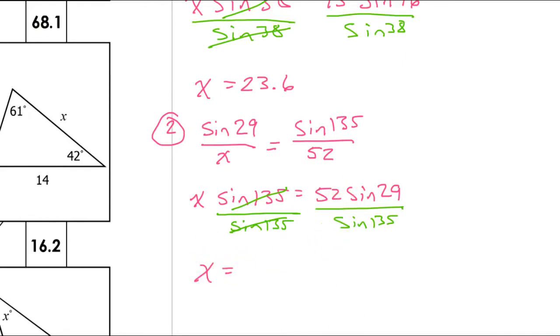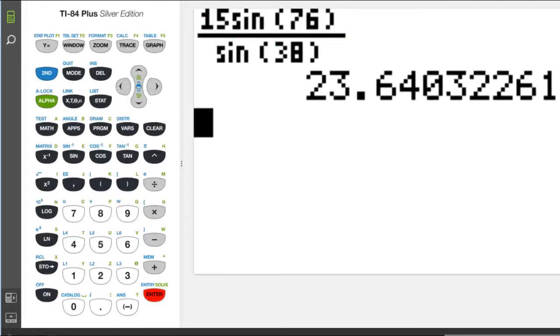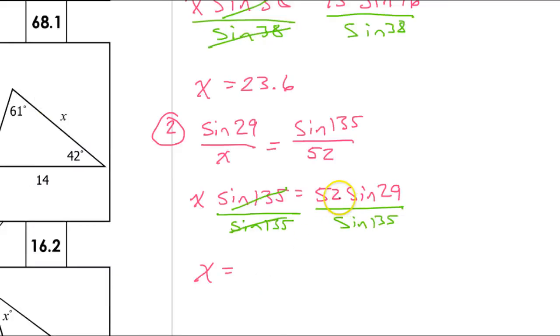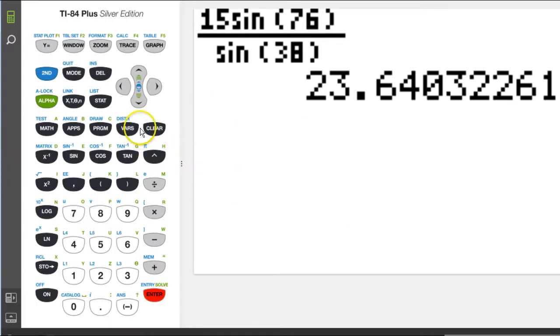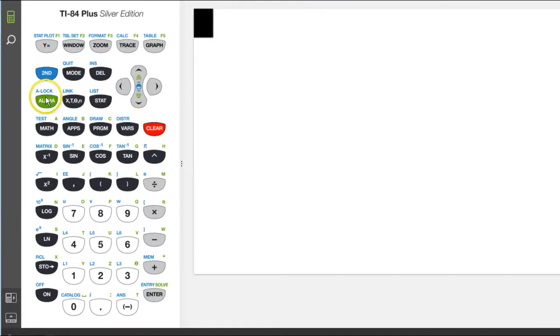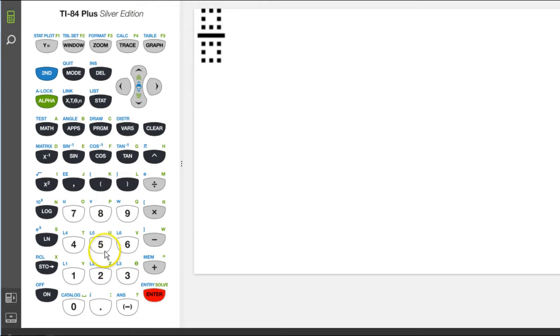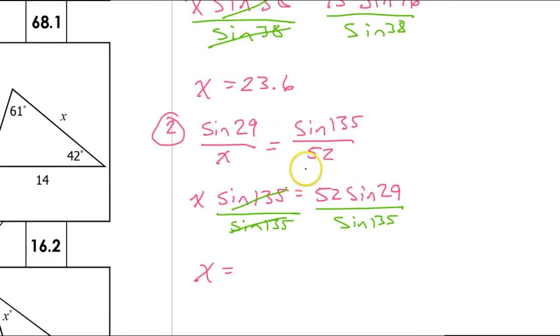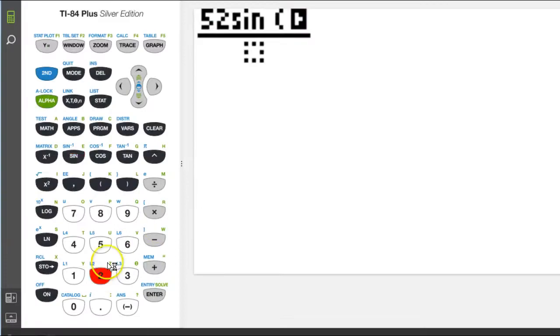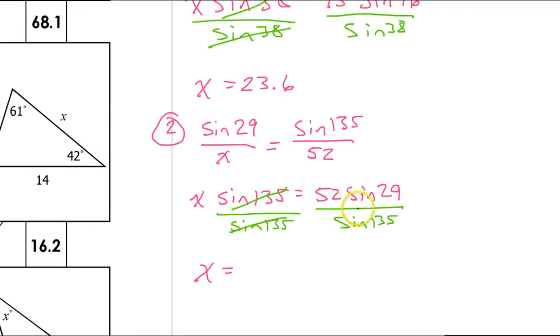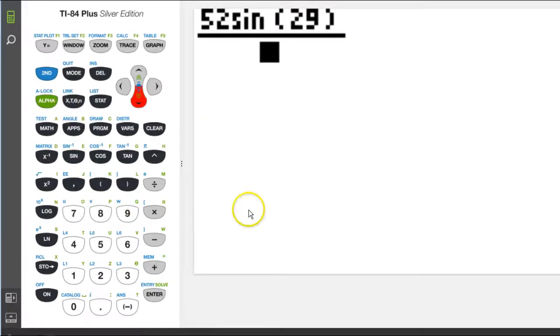So I'm just going to put this in my calculator. Okay, so I need 52 sine 29. And again, if I hit alpha y equals and enter, I get the fraction. So I have 52 sine of 29. And that's going to be over sine of 135 degrees. So sine 135 degrees.